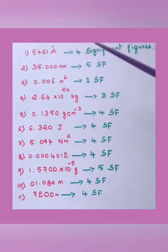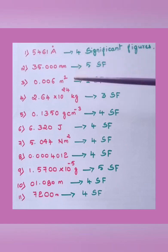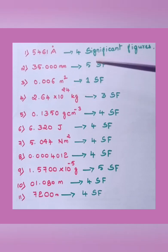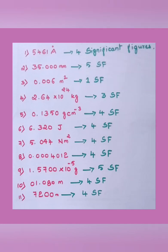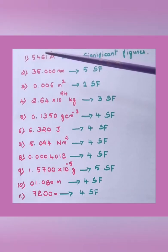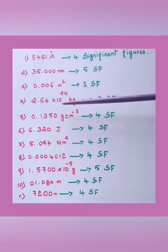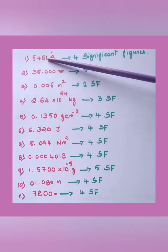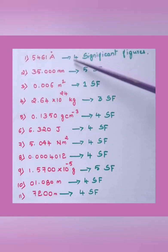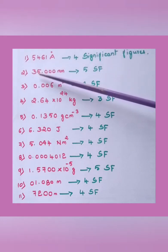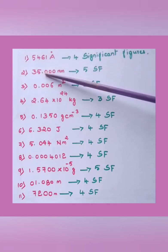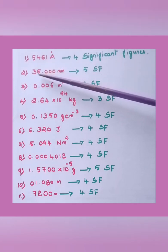Let us now check out with a few examples. Identify the significant figures. If you are learning with this video, this should be registered in your mind. First example: 5461 Angstrom. All are non-zero numbers, so there are four significant figures — 1, 2, 3, 4. Second example: 3500 millimeters — there are zeros on the right side. Note that there are only two significant figures here from the non-zero digits 3 and 5.